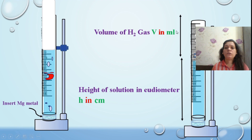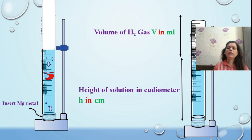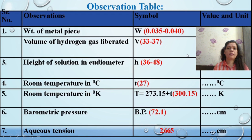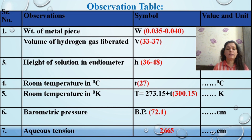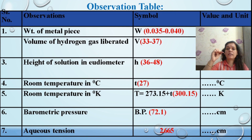You can use a long scale available in the lab to measure the volume. Report the data in your observation table as: weight of the metal piece, volume of liberated gas in cm³ or ml, height of the solution in the eudiometer from the outside water level, and room temperature. According to the room temperature, you must look up the barometric pressure and the aqueous tension.